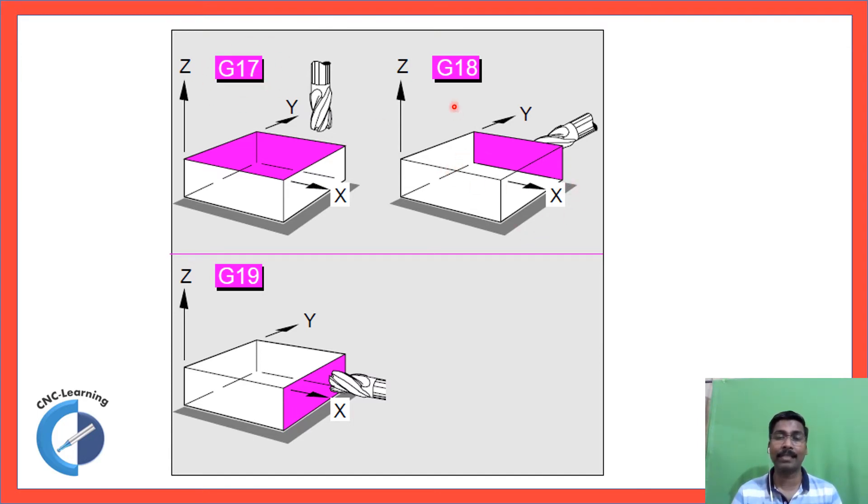And the next one is XZ plane. So you can see, the infeed is Y axis, then it becomes G18. And when the infeed axis is X and the plane is YZ, then it becomes G19.